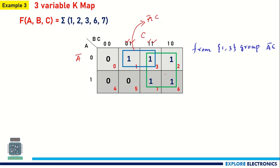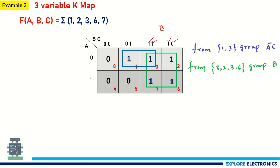Similarly, for the next 4-variable group: A is changing from 0 to 1, so neglect A. B is the same value 1 throughout, so write B. C is changing from 1 to 0, so neglect C. The expression is B for this group. Two groups exist with expressions ĀC and B, so the final expression is B + ĀC.